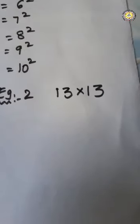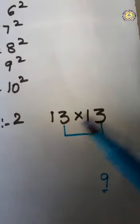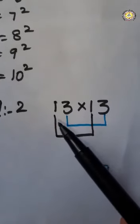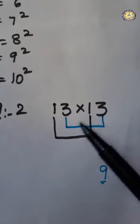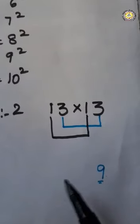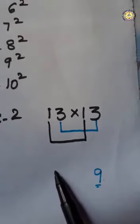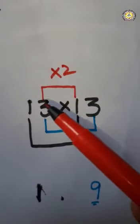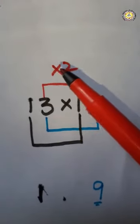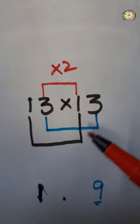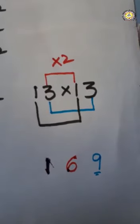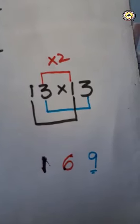Now look example 2. Here you multiply 3, 3. 3, 3s, 9. Next multiply this 1 and 1. 1, 1s, 1. So write here 1 into 2. First multiply these two. 3, 1s, 3. Into 2, 3 into 2, 6. So the middle number is 6 here. So finally 13 into 13 is equal to 169.